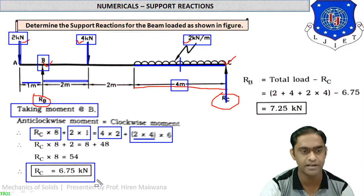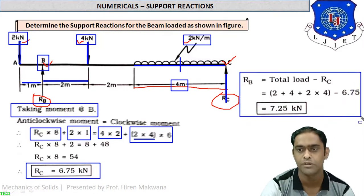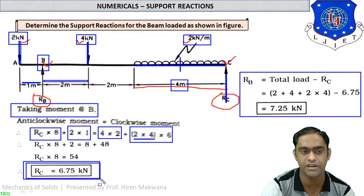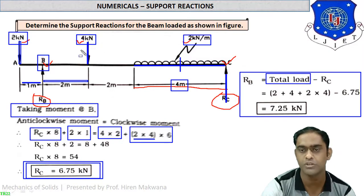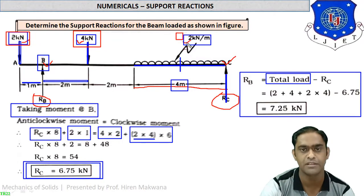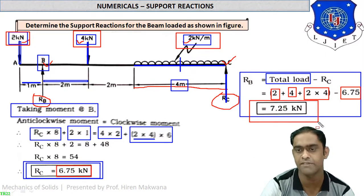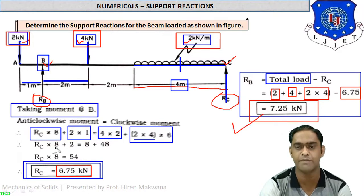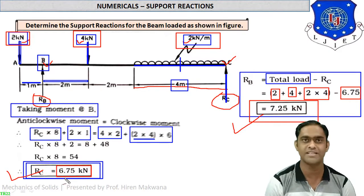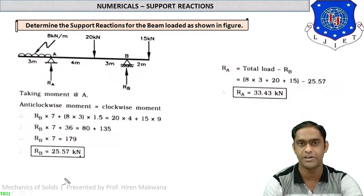Solving the moment equation gives RC = 6.75 kN. Using vertical equilibrium: RB = total load − RC. Total load = 2 kN + 4 kN + (2 × 4 =) 8 kN = 14 kN. Therefore RB = 14 − 6.75 = 7.25 kN. So RB = 7.25 kN and RC = 6.75 kN are the two support reactions for example 2.